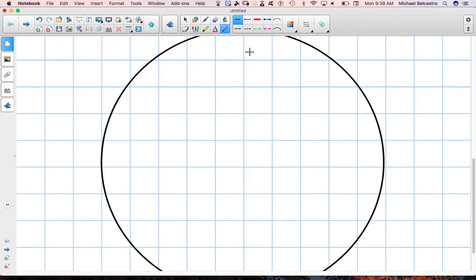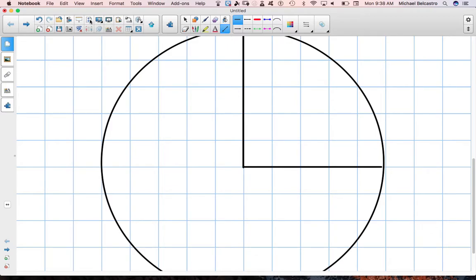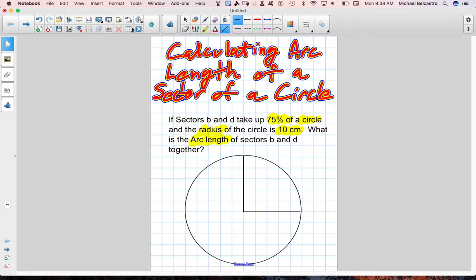It takes up, so sectors B and D. We don't know how long each of them are, but we do know that they take up 75% of the circle. So we're going to say about that of our circle. I should probably zoom out just a little. There we go. Okay, so it takes up 75% of our circle. So we could say, you know, that this is B and this is D. What's important is together there that much, which is a significant portion of the circle. I'll do my best to get around there. There we go. So this is sectors B and D together. We also know that the radius is 10 centimeters. So we'll say that the radius is 10 centimeters.